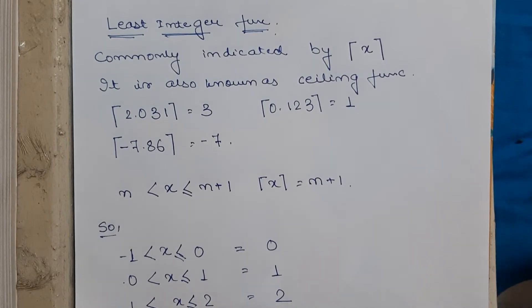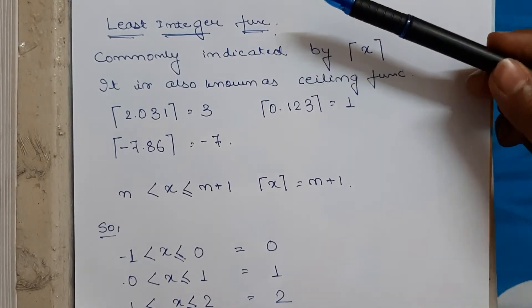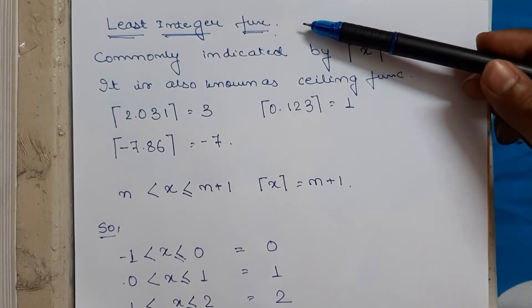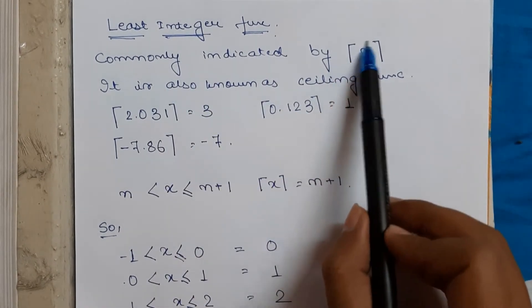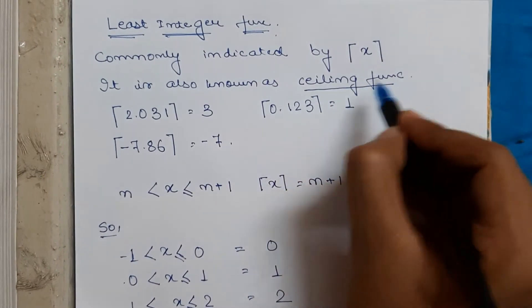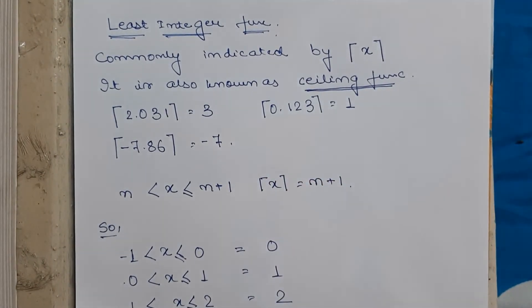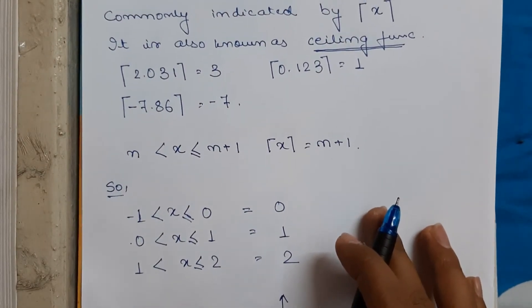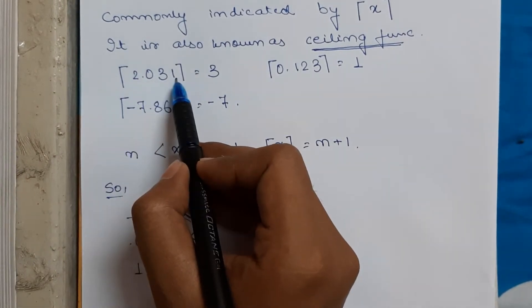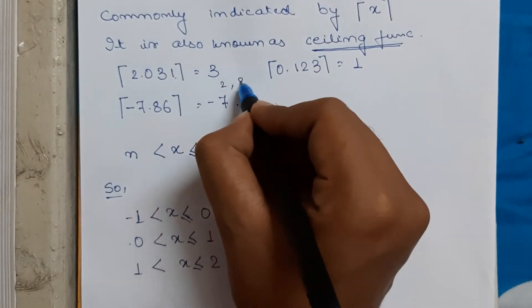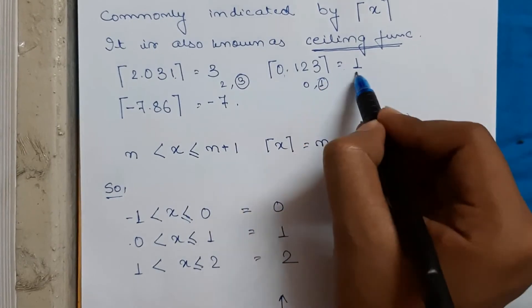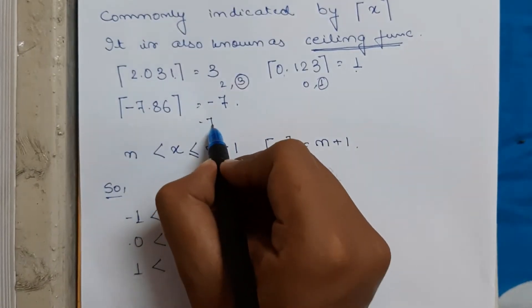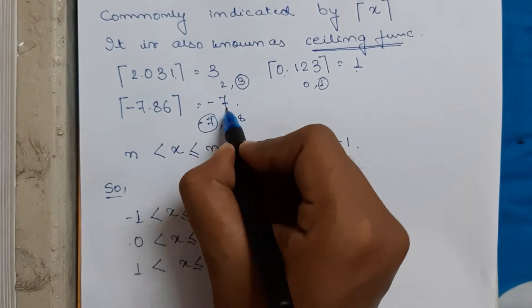After the greatest integer function, we come to the least integer function, also known as the ceiling function. It is also a stepwise function with a discrete graph — not a continuous graph. The ceiling function returns the greatest integer value. For example, 2.301 lies between 2 and 3, so it returns 3. 0.something lies between 0 and 1, so it returns 1. -7.something lies between -7 and -8, so it returns -7 (the greatest among them).